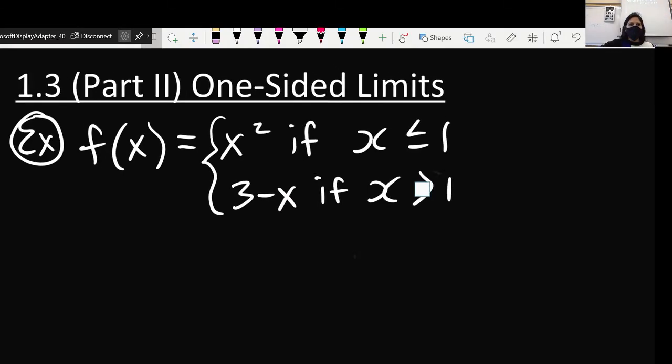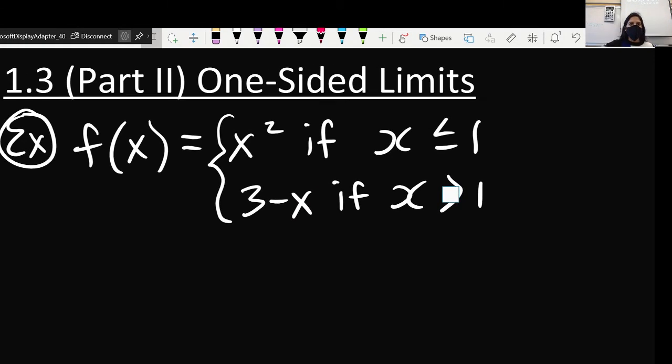Okay, so looking at the second part, which is one-sided limits. Basically, the examples we've looked at so far have been all the same old functions that we're familiar with, right?